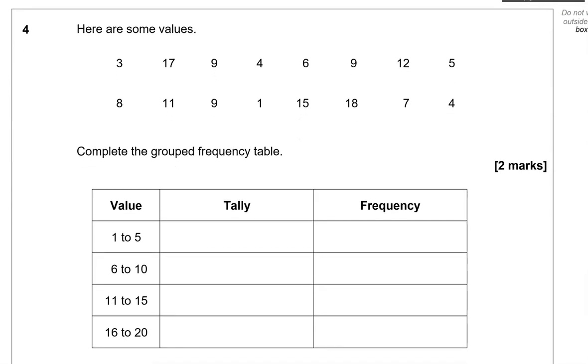Here are some values. Complete the grouped frequency table. So value from 1 to 5, then tally frequency. Let's look at how many values we have ranging from 1 to 5. So we've got 1 here, 2, 3, 4, 5. So we'll write that here.